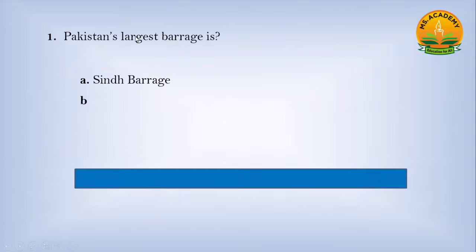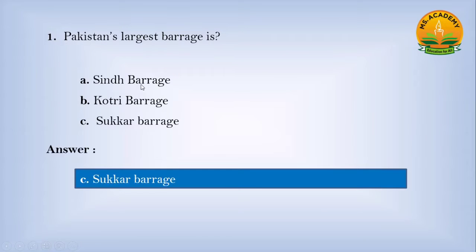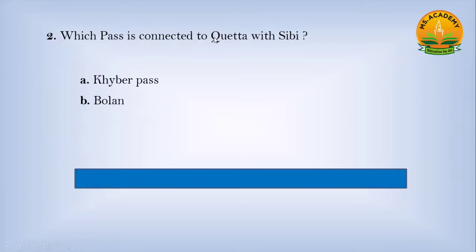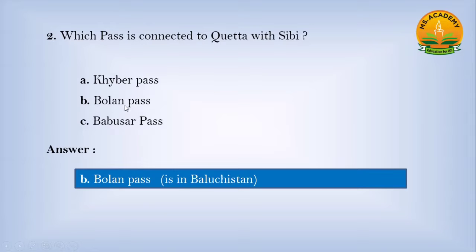Pakistan's largest barrage: option A Sukkur Barrage, option B Guddu Barrage, option C Sukkur Barrage — answer is C, Sukkur Barrage. Which pass connects Quetta with Sibi? Option A Khyber Pass, option B Bolan Pass, option C Babusar Pass — answer is B, Bolan Pass, which is in Balochistan.